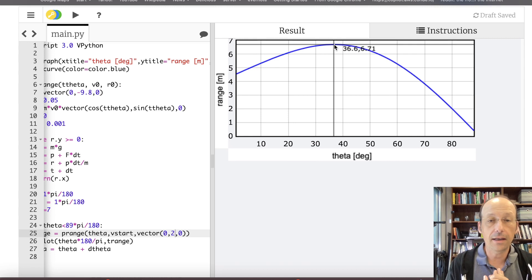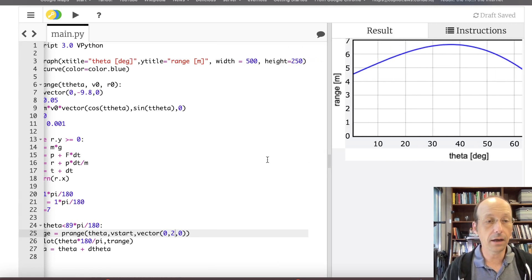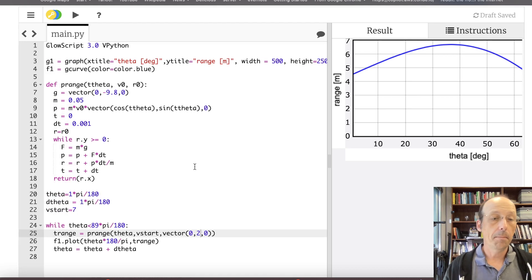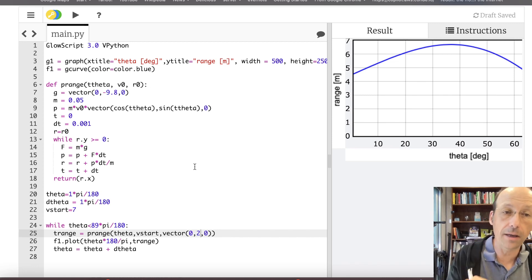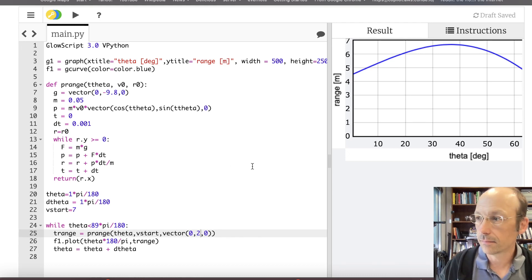But that is how we use functions in Python. And they're really powerful. And I use them incorrectly all the time. But I still use them. And there you go. Functions in Python. Next, we're going to do the same thing. We're going to do it with air resistance. And that's really cool.